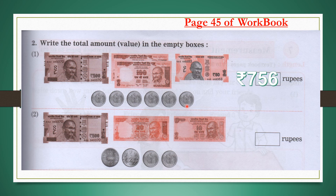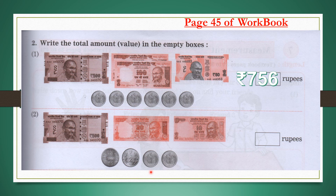For the second question, there is a 500 rupees note, a 20 rupees note, a 10 rupees note, a 5 rupees coin, a 2 rupees coin, and two 1 rupee coins. Adding: 500 plus 20 is 520; plus 10 is 530; plus 5 is 535; plus 2 is 537; plus 1 is 538; plus 1 is 539. The total value is 539 rupees.